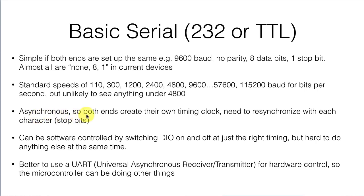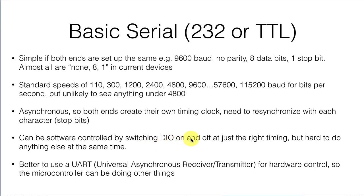RS-232 is asynchronous, which means both ends create their own timing clock. They don't need to continuously re-synchronize with each other, but they do need to re-synchronize every time they start receiving or sending a character to line up with each other. This requires stop bits in the protocol, which take some added time. It can be software-controlled by switching a digital output port on and off if you get the timing just right, but it's hard to do anything else at the same time.